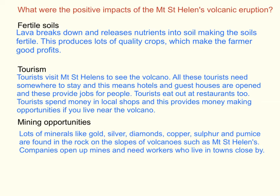In the run up to the eruption of Mount St Helens, people were excited to see a volcano in action and flocked to the area, needing somewhere to stay, food, souvenirs, and so on — providing jobs for people living nearby. In the aftermath, people continued to visit to see the eruption and devastation for themselves. The third positive impact is the opportunity for mining: minerals like gold, silver, diamonds, copper, sulphur and pumice are found on the slopes, and companies open mines employing local workers.